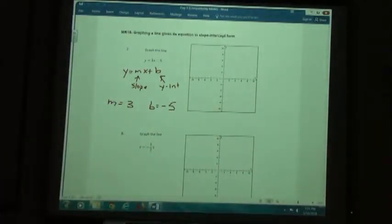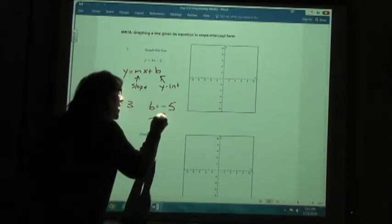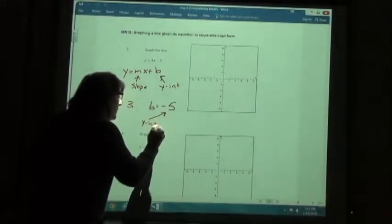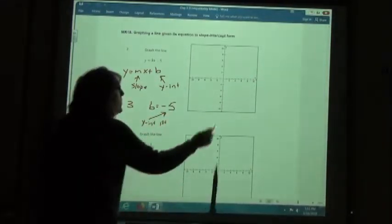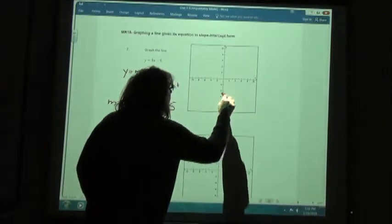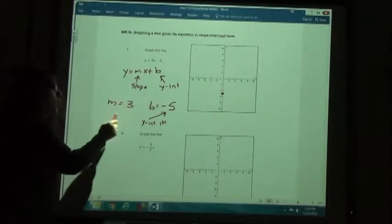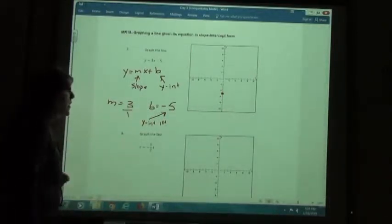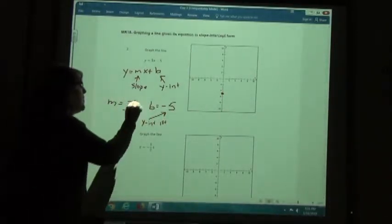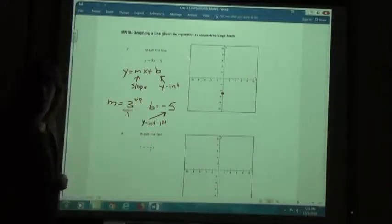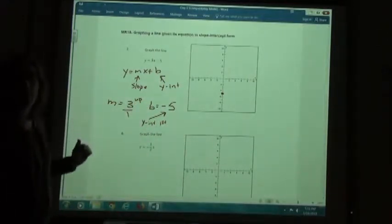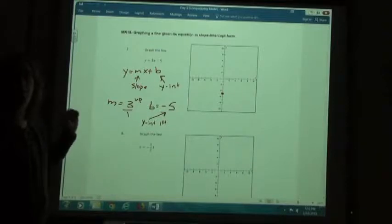What you're going to do is start and plot the y-intercept first. So I'm going to plot negative 5 on my y-axis. I'm then going to use my slope to get to the next point. Since this is a whole number, I'm going to write it over 1. The top number is a positive 3, so I'm going to go up. Remember, the top number is the change in the y-direction, so up or down.